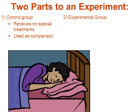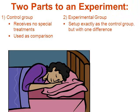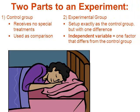We're going to compare the data of the control group to the data of the experimental group. If the control group receives no special treatment, then whatever we're testing, the experimental group is going to receive. The experimental group is set up exactly the same as the control group, but receives whatever it is you're testing. Whatever you're testing is called the independent variable — it's the one factor that's different from the control group.